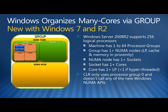Windows organizes the many cores via the idea of a group. A group consists of one or more nodes, a node has one or more sockets, a socket has one or more cores, and a core can have one or more logical processors. You need to know this only if you're a C++ programmer programming directly to the hardware. If you're a .NET programmer you need to know only that the CLR uses processor group 0 and it handles this for you when you use the System.Threading.Task classes. Note that .NET only supports the first 64 processors, not all 256 at once.